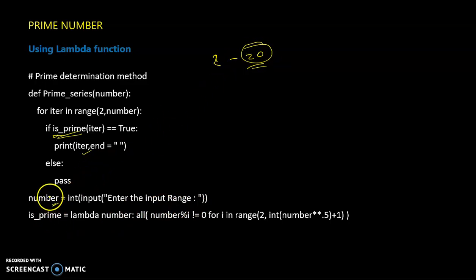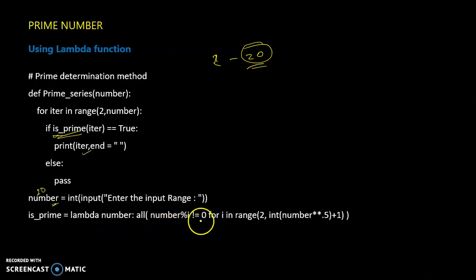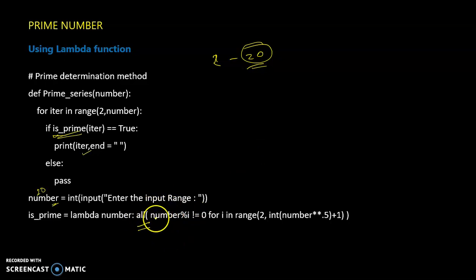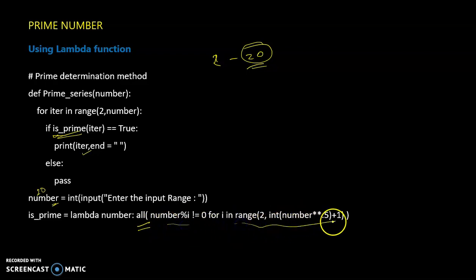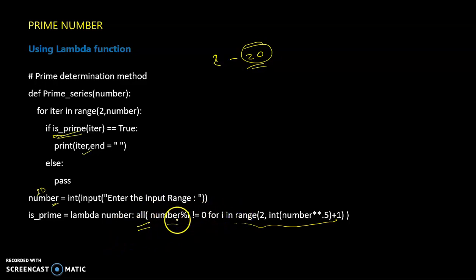It will store the number of the variable. Then, from the is_prime lambda function: number mod i not equal to zero. The 'all' built-in function returns a true value. The argument is: number mod i not equal to zero for i in range.